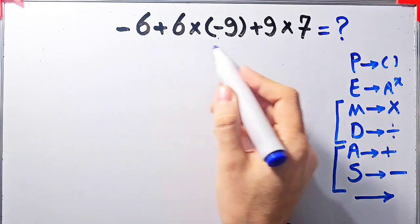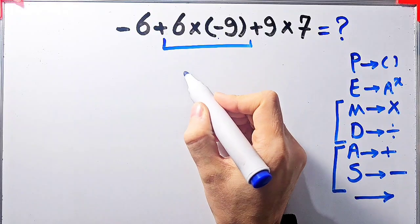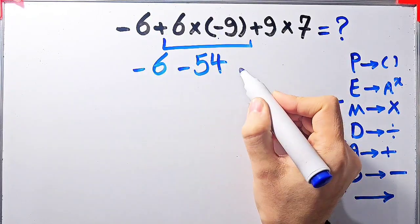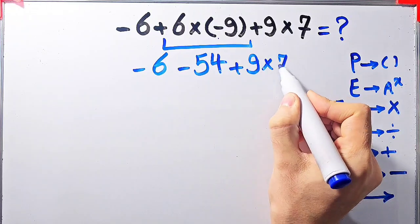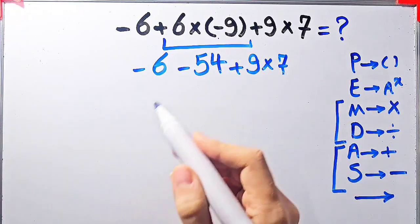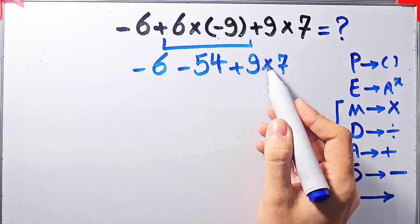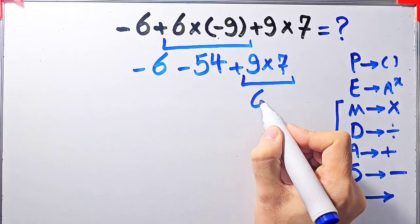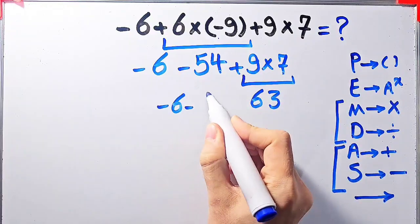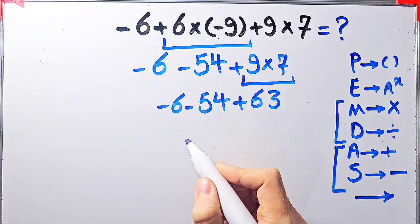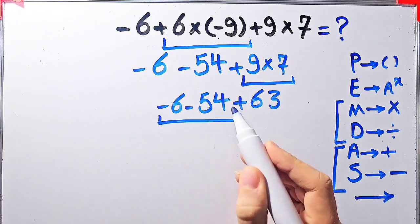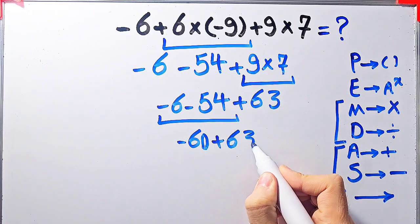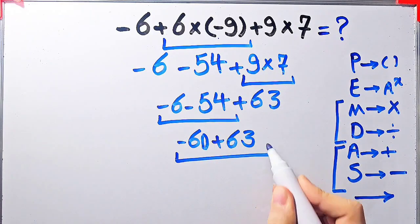According to the PEMDAS rule, first we simplify the multiplication: 6 times negative 9 equals negative 54. Now we have negative 6 minus 54 plus 9 times 7. Next we simplify 9 times 7, but first: negative 6 minus 54 equals negative 60. Now we have negative 60 plus 63. The final answer of this question equals 3.